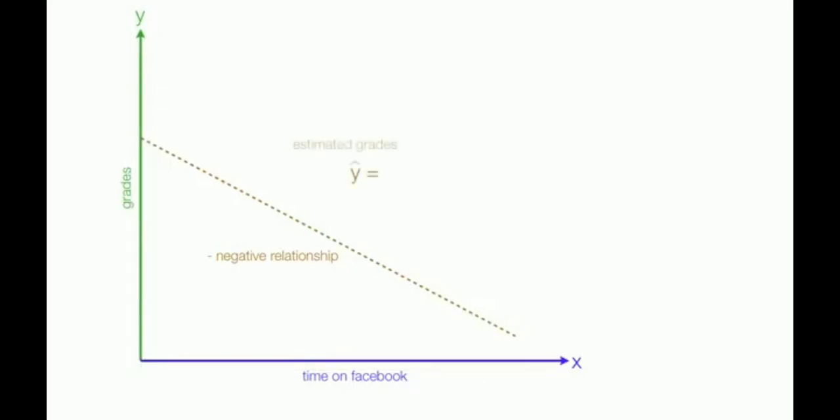What we're estimating is still grades. Estimated grades is equal to b-naught minus b-1 times x. Where x is time on Facebook. B-naught is still the y-intercept. The y-intercept.